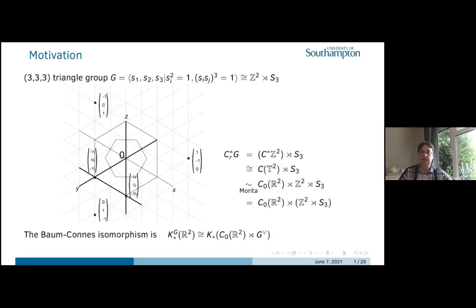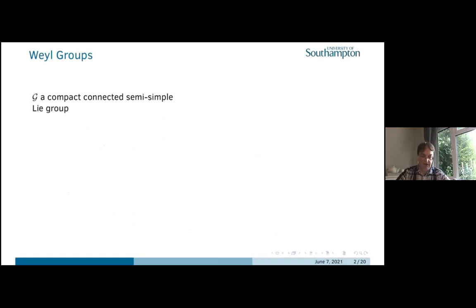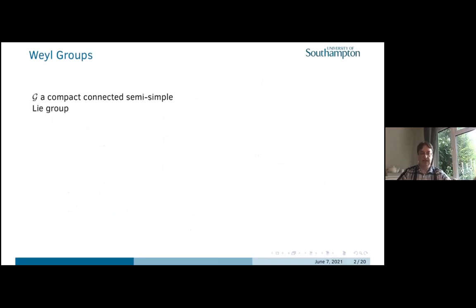What the Baum-Connes isomorphism tells us is that the equivariant K-homology for our original group G is given by the K-theory of a crossed product by a slightly different group. They're both Z² semi-direct products, but slightly different groups. The explanation of that in some sense is Langlands duality.